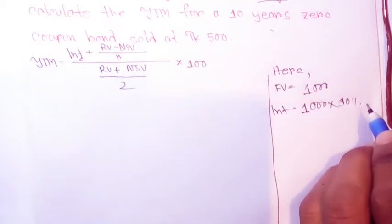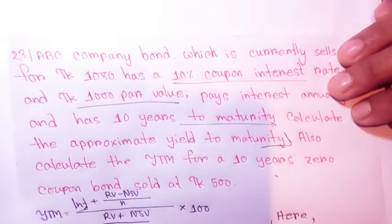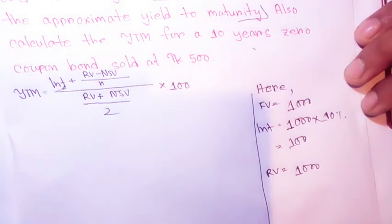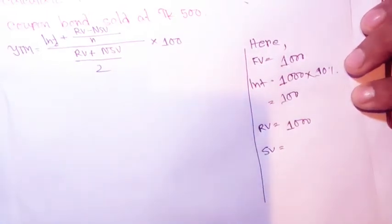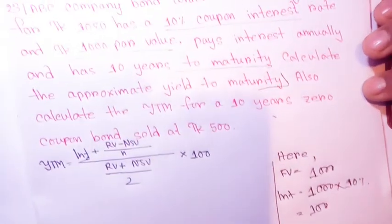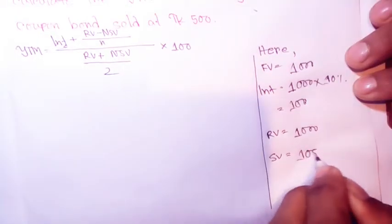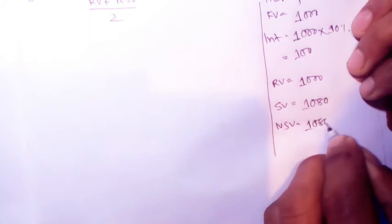The interest is 10 percent. The RV, the redemption value or face value, is 1000. The selling price - because the bond currently sells for 880 taka, that's the net selling value. The flotation cost would reduce the selling price, but here the bond sells for 880.